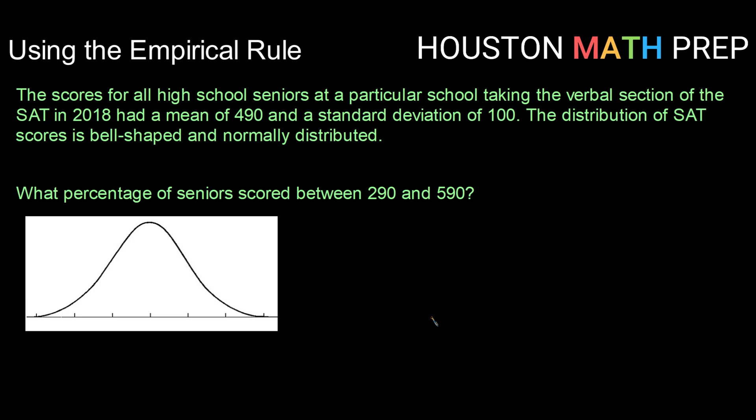Here's our setup for this set. The scores for all high school seniors at a particular school taking the verbal section of the SAT in 2018 had a mean of 490 and a standard deviation of 100. The distribution of SAT scores is bell-shaped and normally distributed.